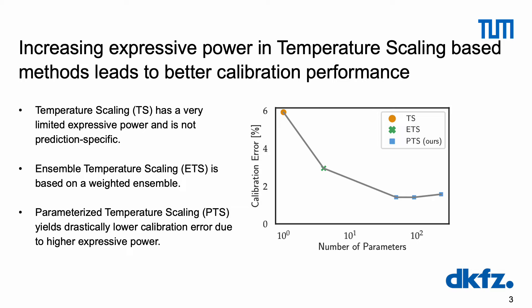A well-known family of post-hoc calibration methods are based on the idea of temperature scaling. These approaches are particularly appealing since they do not affect the accuracy of the transformed model and have a high data efficiency. However, they are collectively limited by a low model capacity. That is, basic temperature scaling TS fits a single scalar parameter, and extended temperature scaling ETS is based on a weighted ensemble of three fixed temperatures.